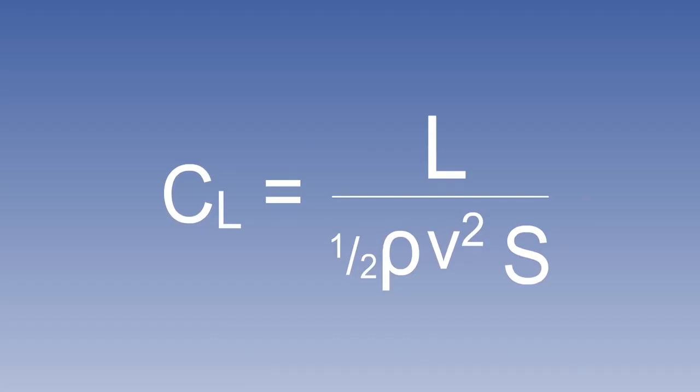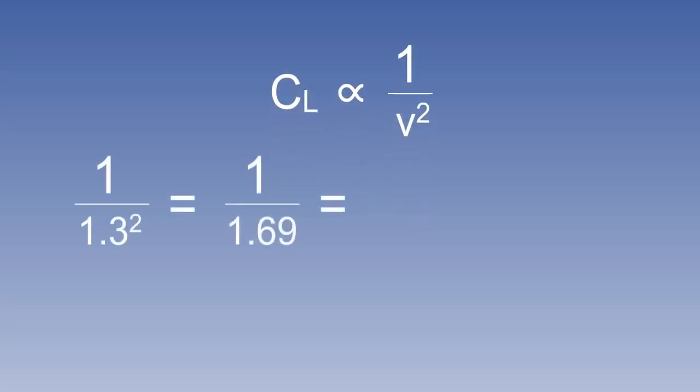Since density, lift and wing area are constant, this can be written as C_L is proportional to 1 over V squared. 30% above can be written as 1.3. So 1 over V squared becomes 1 over 1.3 squared. This equals 1 over 1.69, which is 0.59 or 59%.